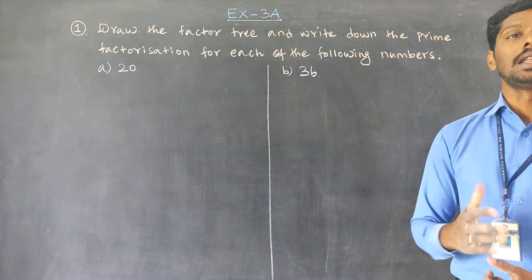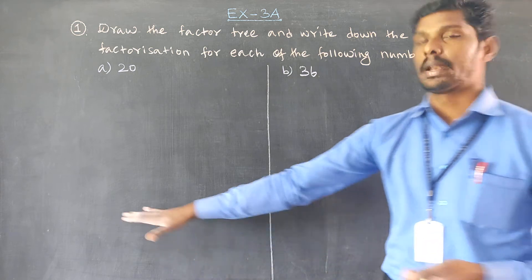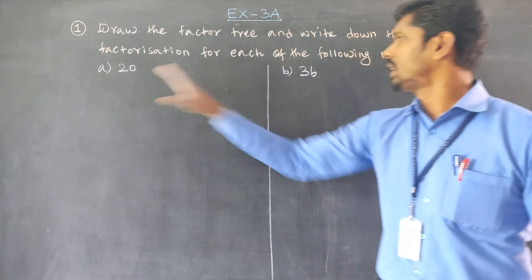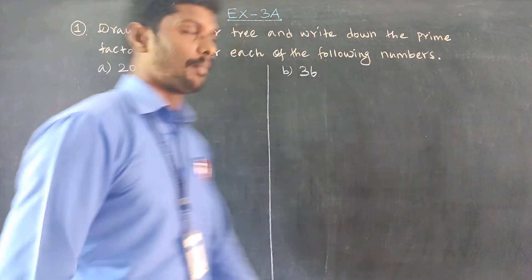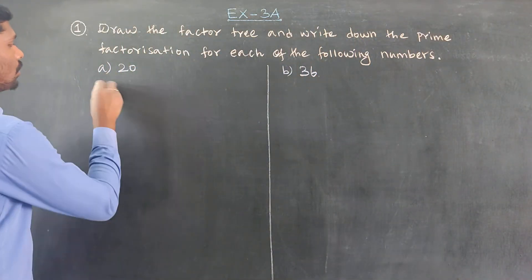These are factor trees and prime factorization. Since 20 and 36 are small numbers, we can write the solution easily.